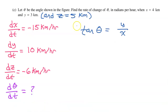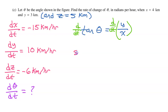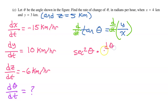Let's differentiate both sides of the equation with respect to T so that dθ/dt appears. On the left-hand side, the derivative of tangent is secant squared, so we write secant squared theta. Because these variables don't match, we use the chain rule and multiply by the derivative of the inner function, which is dθ/dt.